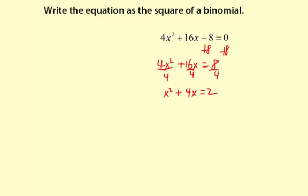What I did so far is I just made this process of finding the trinomial that we need easier. I subtracted the constant term, divided through by the leading coefficient, and now we just have x squared plus 4x on the left, and we can work with that to make it into a trinomial.